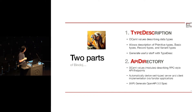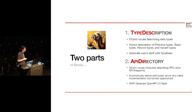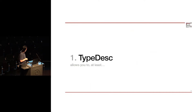We are also almost there to generate OpenAPI 3.0 specifications — we're actually generating that, but some of the tests are failing. We hope we can release that very soon. Given that overview, I'm going to give you some very quick examples of both of those parts.